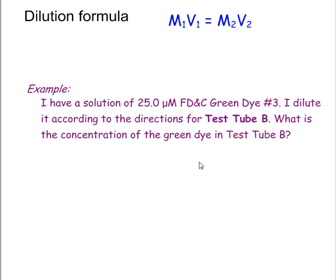So I'm going to use a dye that none of you have, a green dye, 25 micromolar green dye number three. Now test tube B says it has eight milliliters of water and two milliliters of the stock solution. So I want to know what the concentration will be after I do the dilution.